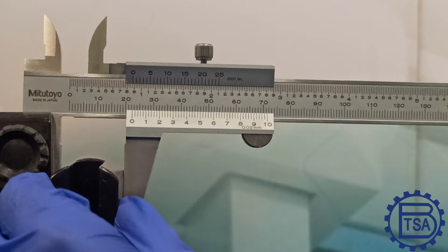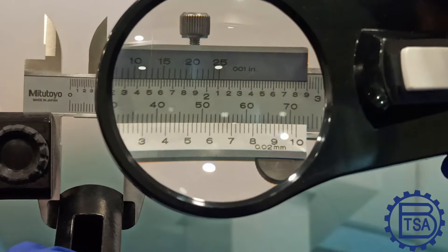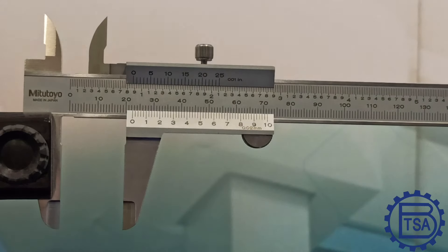Vernier calipers require good eyesight or magnifying glass to read correctly. It is difficult to read from a distance and also from different angles. It is relatively easy to misread the last digit.